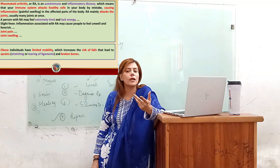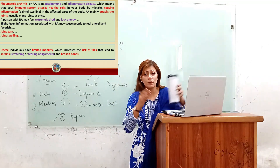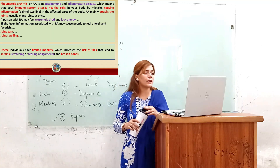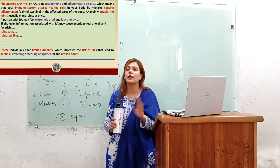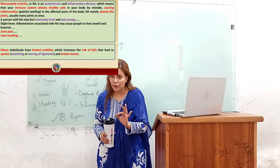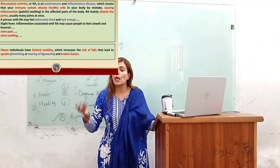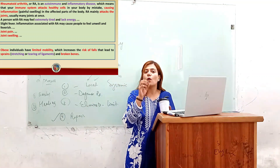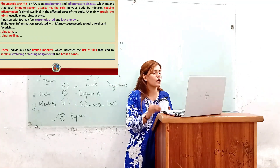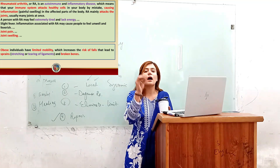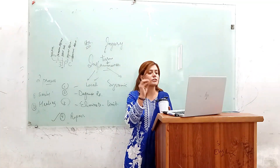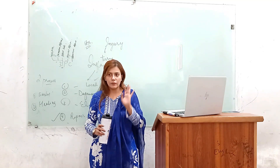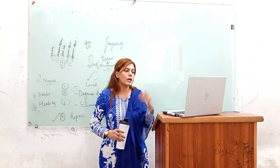Another example is arthritis. Arthritis is basically an autoimmune disease. In an autoimmune disease, my immune system attacks my healthy cells. In rheumatoid arthritis, the immune system attacks the joints, causing pain, swelling, stiffness, lethargy, and low energy levels — these are the signs of arthritis.